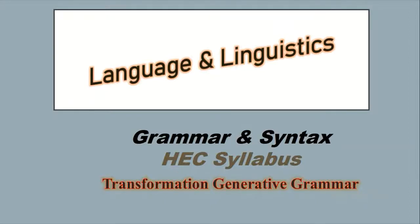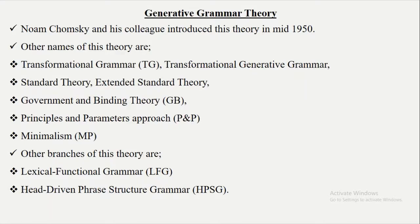In this lecture we are going to talk about Transformational Generative Grammar, a theory proposed by modern linguist Noam Chomsky. Chomsky and his colleagues introduced this theory in 1950. Other names of this theory are Transformation Grammar, Standard Theory, Government and Binding Theory, Principles and Parameters Approach, and Minimalism. Other approaches include Lexical Functional Grammar and Head-Driven Phrase Structure Grammar.